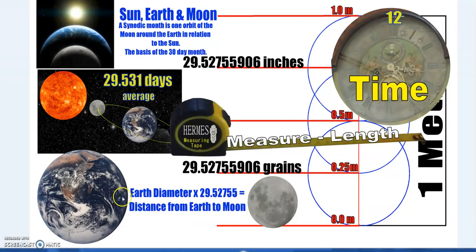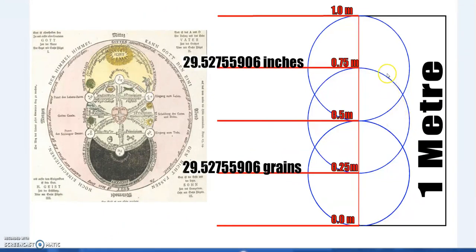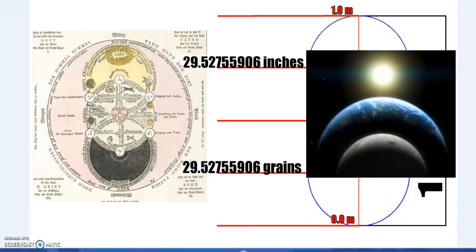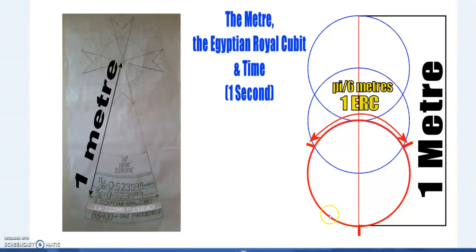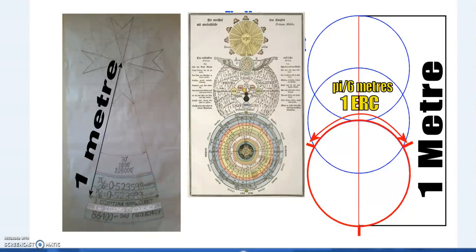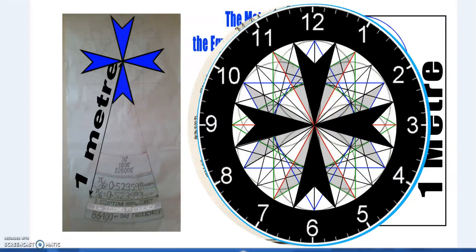If you multiply the diameter of the Earth times 29.527 — a synodic month — you also get the distance from the Earth to the Moon. Here, for instance, is a Rosicrucian illustration of the Sun and Moon, but this double Vesica covers Sun, Earth, Moon, and also includes stars. A one-meter pendulum swung at no more than 30 degrees creates one Egyptian royal cubit, so one second equals one meter equals one cubit using the same double Vesica Piscis. Each one-third of the circumference gives us an Egyptian royal cubit.